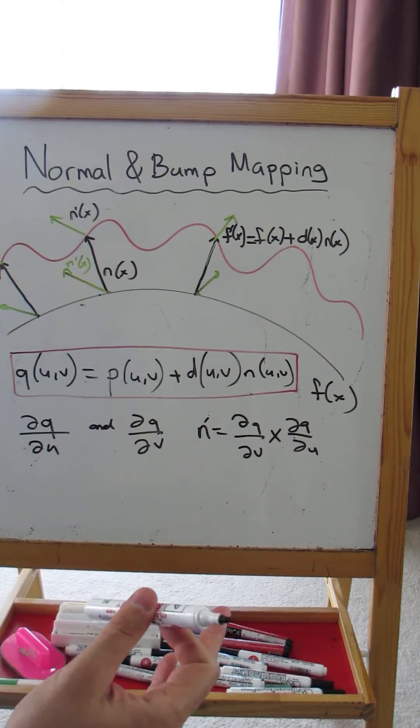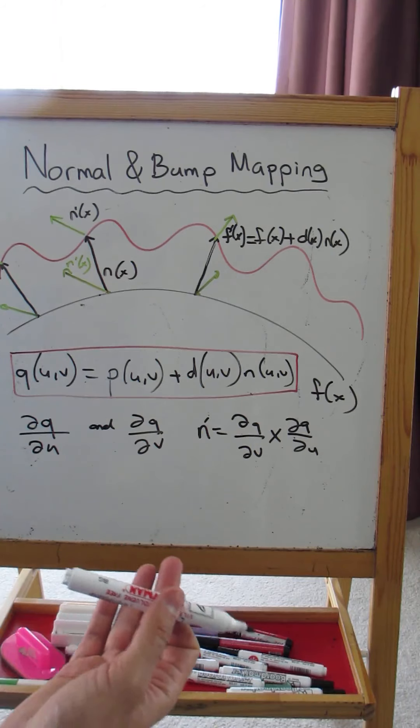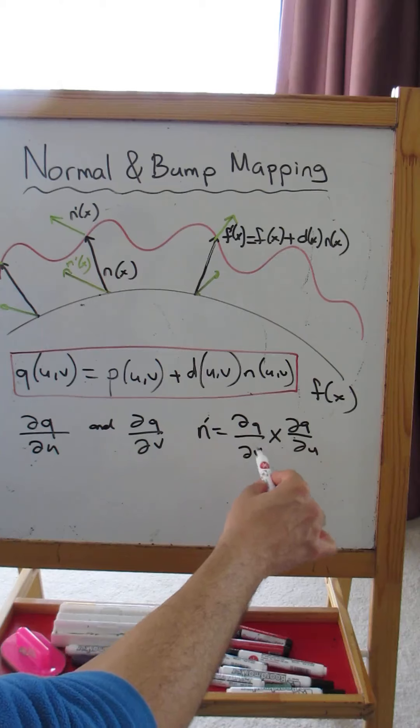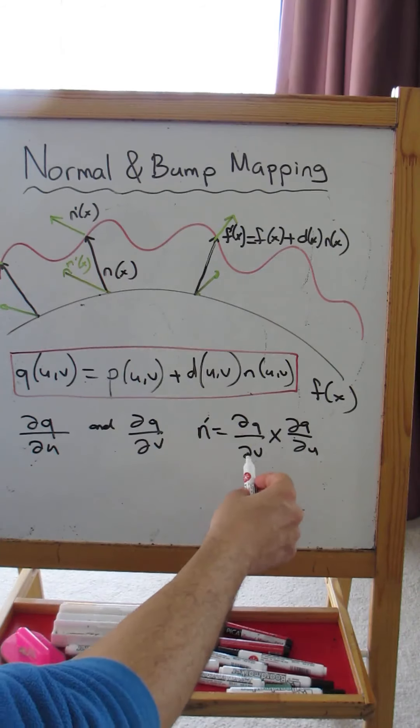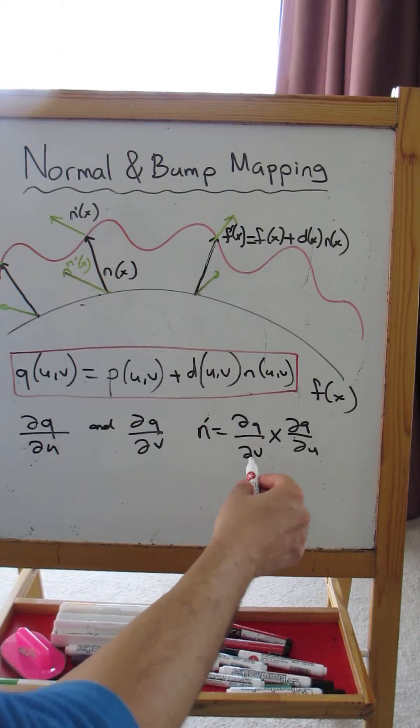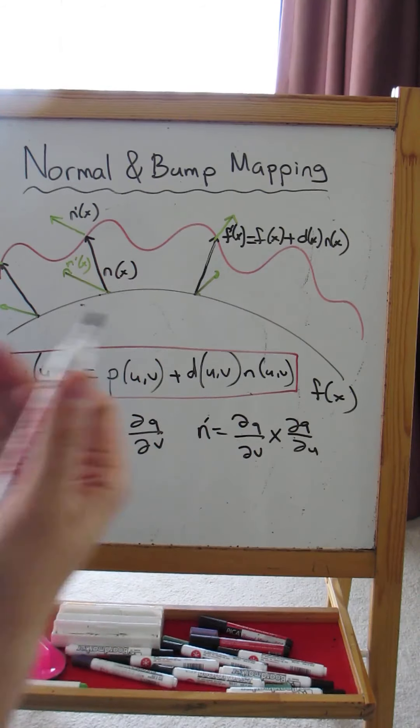For a sphere, I know that I must do dQ/dv cross dQ/du because I know the way these parameters change. When v and u change, I know the direction I move on the sphere.